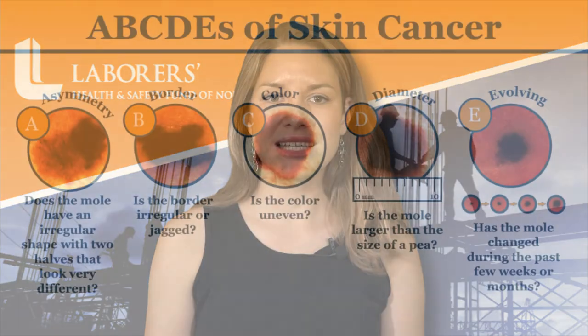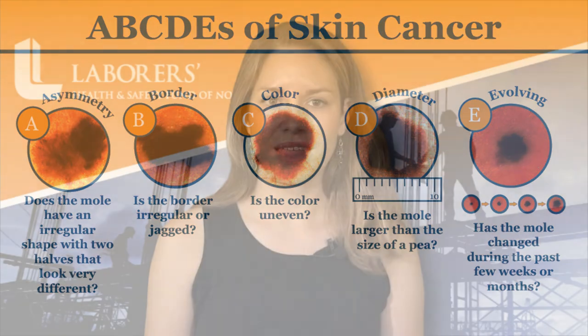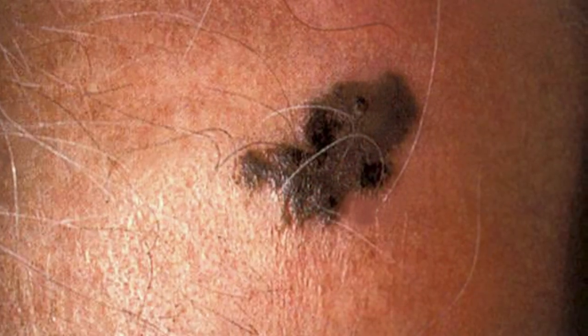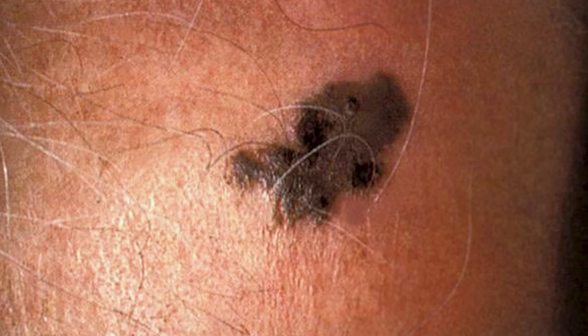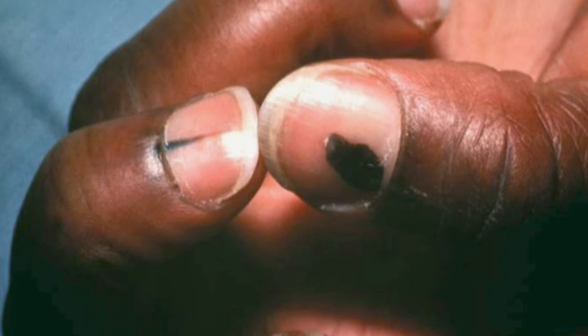Follow the ABCDE principle: asymmetrical shape, irregular border, changes in color, diameter, and evolving. The ABCDE principle may not always apply to people of color. If you have darker skin, look out for dark spots, growths, or a darker patch of skin that's growing, bleeding, or changing. Also watch for sores that won't heal or that heal and return, patches of skin that feel rough or dry, and dark lines underneath or around the fingernails or toenails.